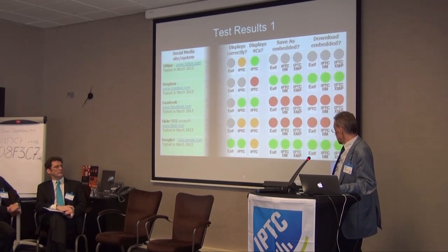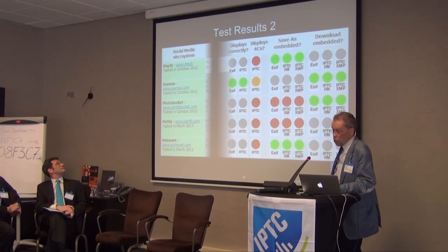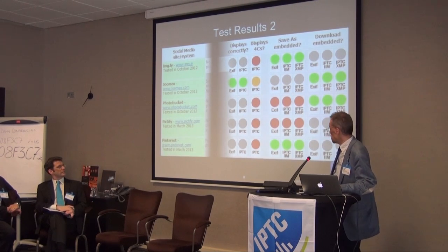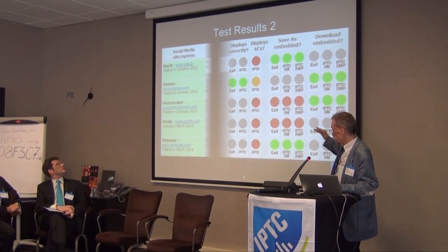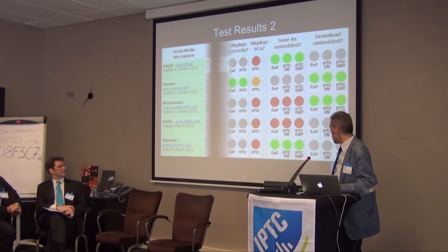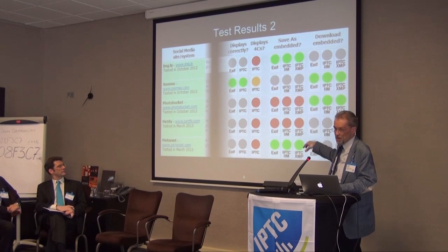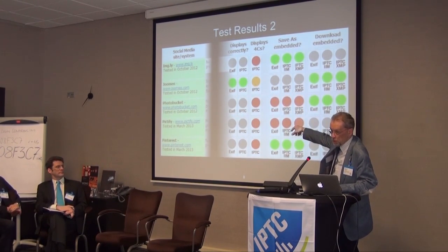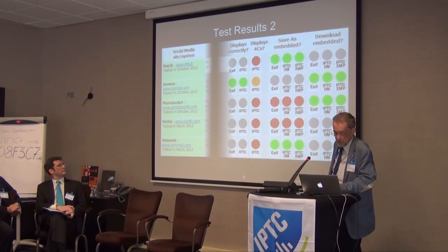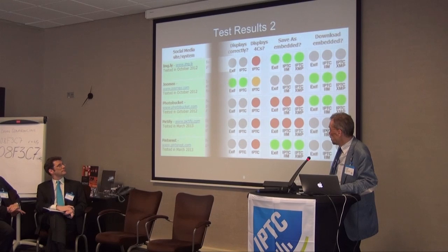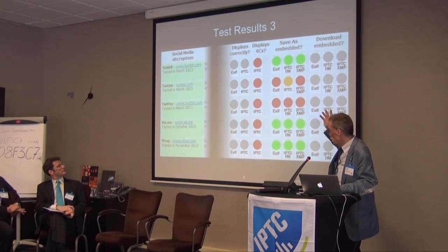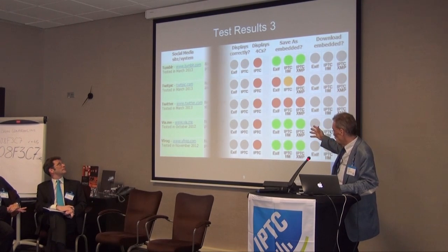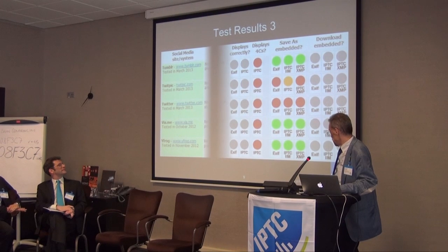The platforms are listed in lexical order. Facebook and Flickr could perform better. Google does quite well. We tested both large and small platforms — those common in this area: ImageShack, Jumeo, Photobucket, Pictify, and Pinterest, which is more widely used. Gray in the results means there was no possibility to test, because either you cannot download or cannot save the image as a file, or if nothing is displayed, we cannot say whether it is correct or incorrect. Tumblr, a more widely used system, performs quite well. Twitter — metadata are gone. Wyfrog performs better.